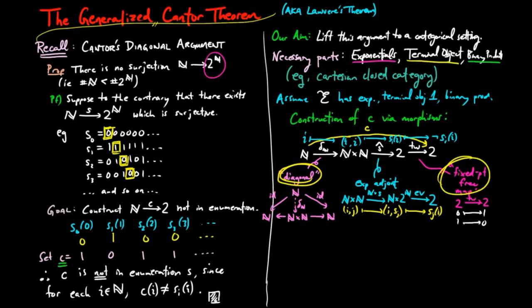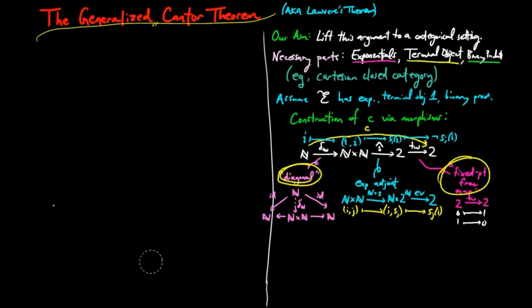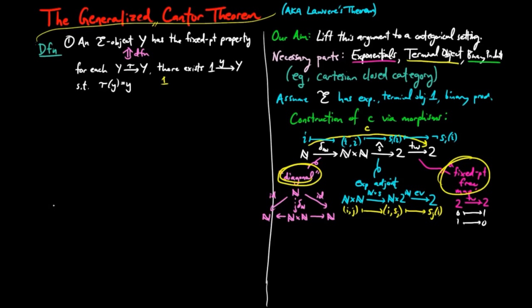Before we prove the categorical lifting of this theorem, we need to make the following definitions. One, an e object y is said to have the fixed point property provided for each endomorphism tau from y to y, there exists a point little y in y such that tau y is equal to y.